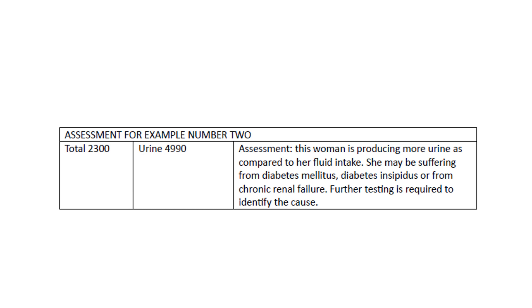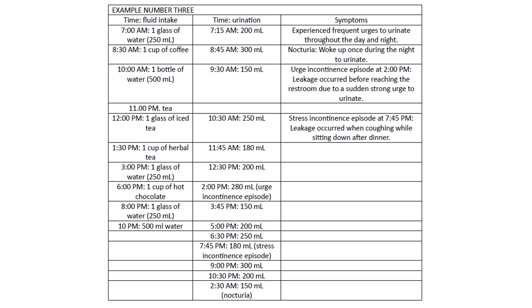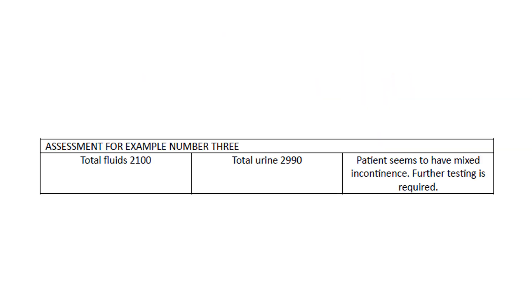In example number three, we again see three columns. The patient experiences frequent urges to urinate during the day and night, woke up once during the night, passed and leaked urine once during the day, and also had stress incontinence once in the evening when coughing while sitting down after dinner. The total fluid intake was 2,100 ml and total urine passed was 2,900 ml. The patient appears to have mixed incontinence — both urgency incontinence and stress incontinence — and further testing is required for diagnosis.